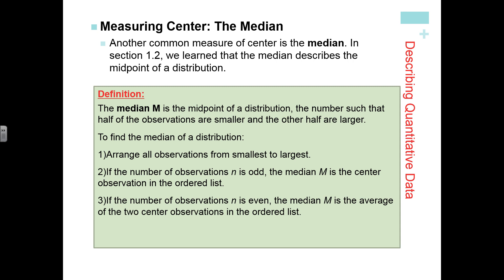Another measure of center is the median. The median is simply the middle number. For statistics, we call it the typical number or the typical observation. To find the median, you put all your data in order from smallest to largest and then find the middle of that data set. If the number of observations is odd, the middle is just the middle number. But if it's even, you have to take the average of the two middle numbers.